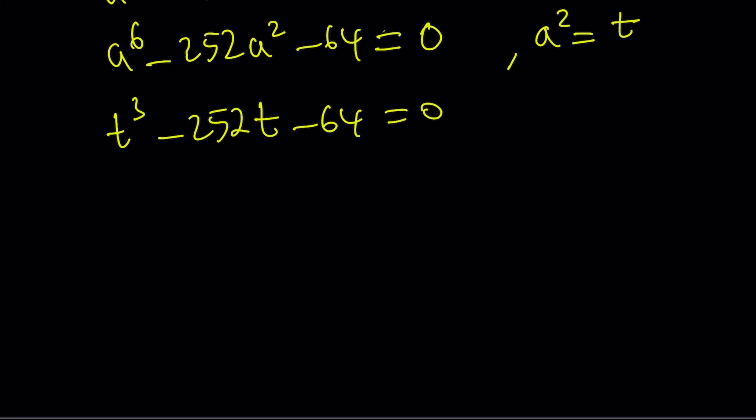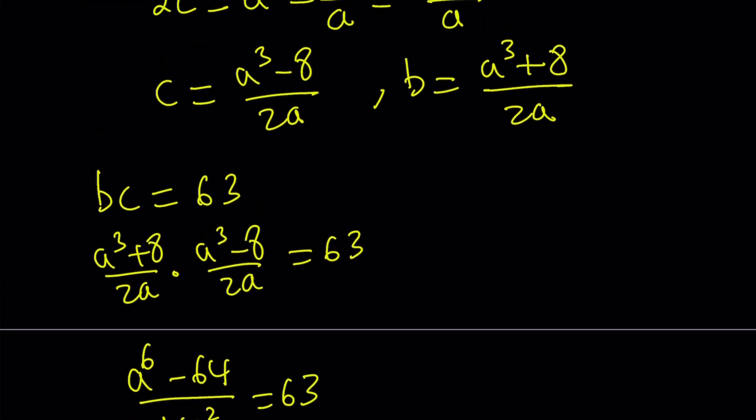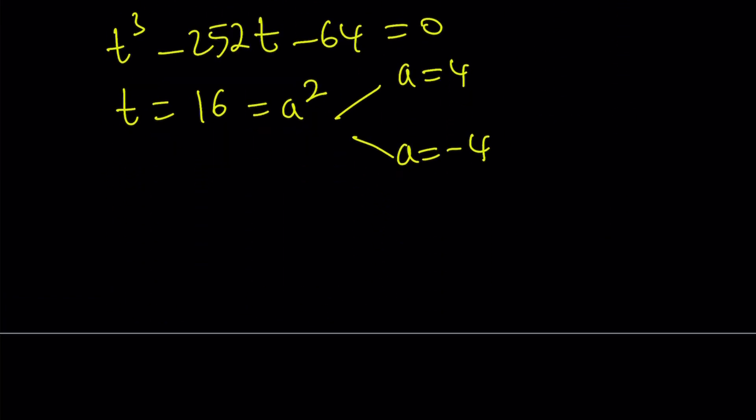We get t cubed minus 252t minus 64 is equal to 0. Now, from here, I'm just going to give you the solution for simplicity's sake, but you can definitely solve this either using the cubic formula or some other method. Obviously, rational root theorem is going to give you the answer. But notice that t needs to be positive. So t equals 16 is our rational solution, and that equals a squared. This gives us two options, either a equals 4 or a equals negative 4. But you've got to remember, c can be written as a cubed minus 8 over 2a. So from here, I can find the values of b and c. If a is equal to 4, b becomes 9 and c becomes 7. If a is equal to negative 4, b becomes negative 7 and c becomes negative 9.